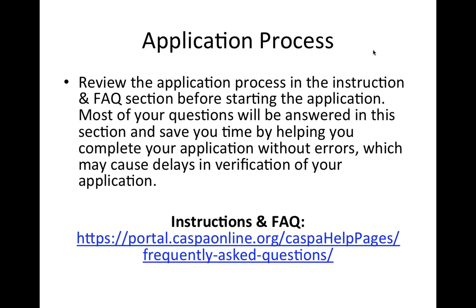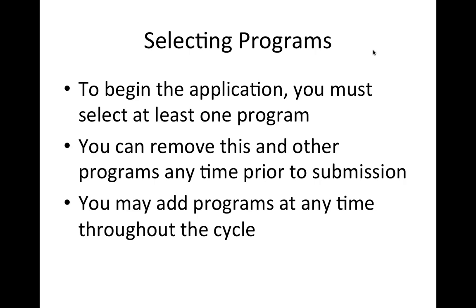In addition to the three options, some programs may require additional items to be completed or received by their deadline, such as supplemental applications, official test scores, and a third evaluation. In order for your application to be verified, these things are not required by CASPA but may be required by your program. So it is important that you know each program's deadline and requirement so that your application is eligible to be reviewed by a program.